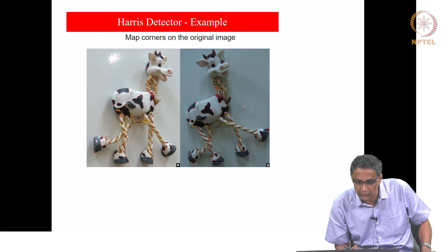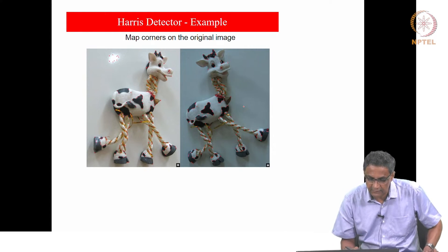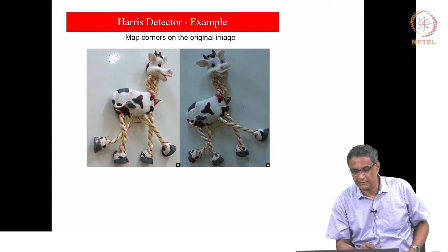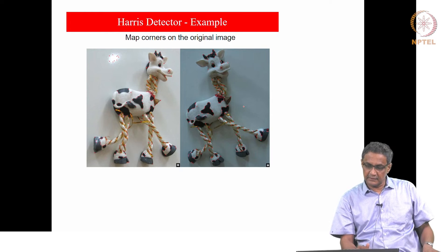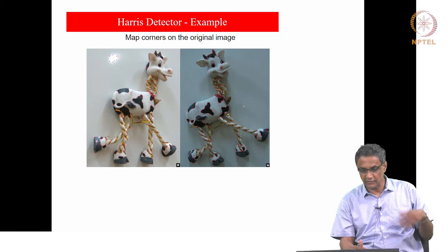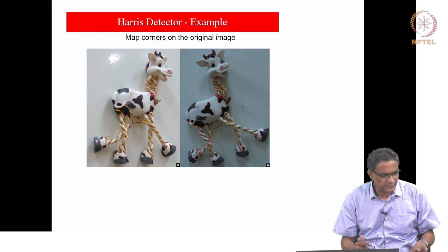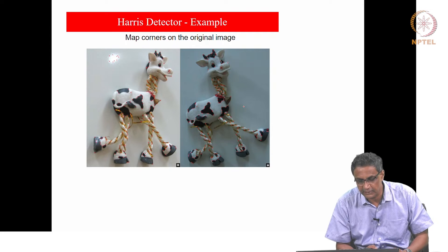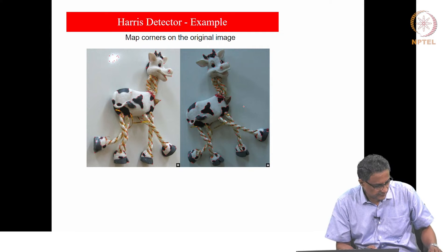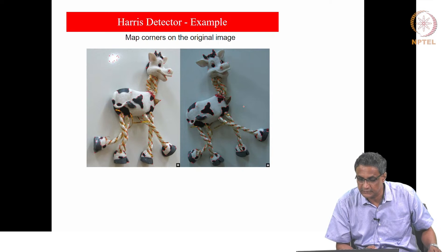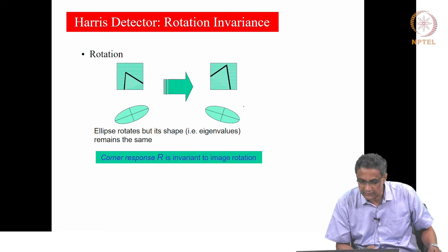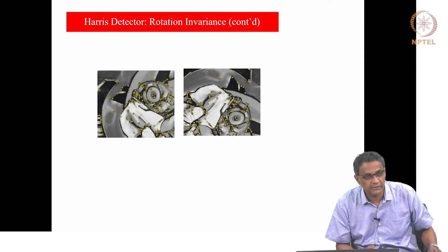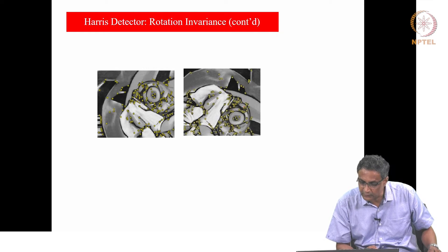If you plot them on the image, they look like that. A corner, the way we define it, is like what we think it should be — but eventually anything that gives out a corner response that is sufficiently strong will be picked. It is not humanly possible for us to examine what kind of corner it is, but wherever the corner response has been significant, it picks up all such points. One thing I mentioned was rotation invariance — you can have a rotated picture and the features are actually covariant, and you should be able to match them.